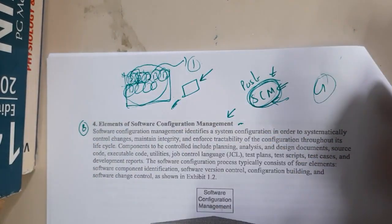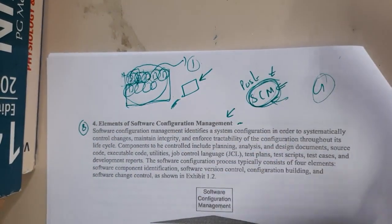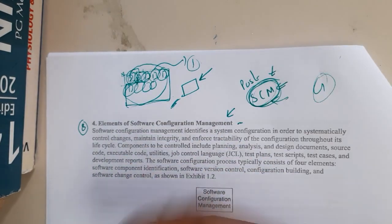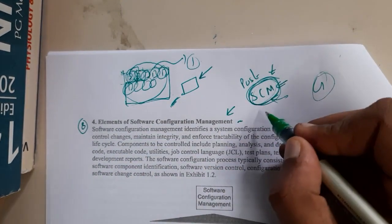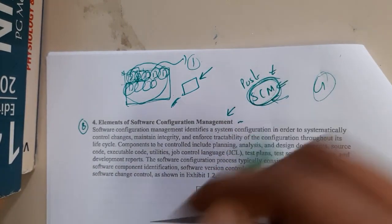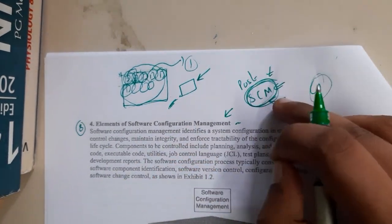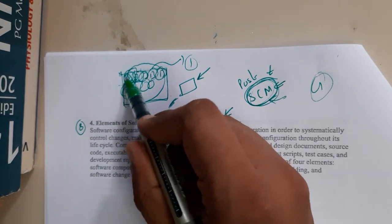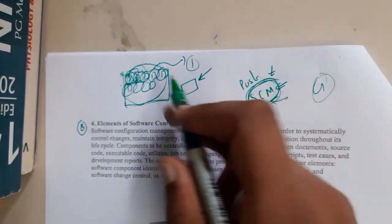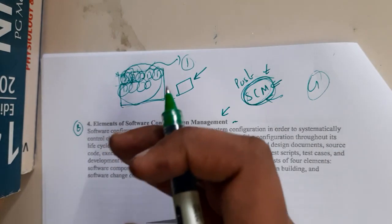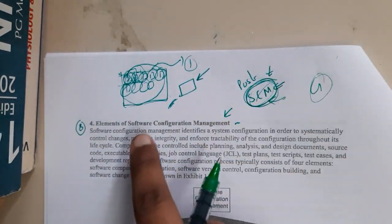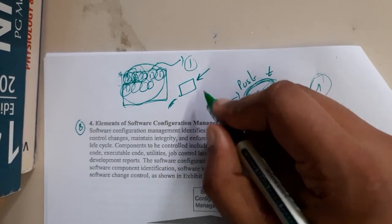Nowadays we have GitHub for this purpose, but previously these tools didn't exist. Back then the SCM acted as a manual GitHub — he would take an updated file, push it to the server, and all other team members would download that copy and use it. He managed all of that manually.